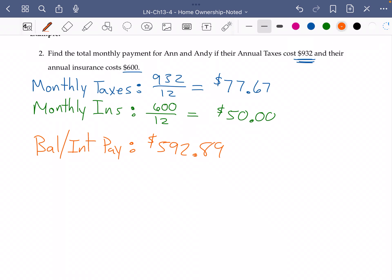And so their total monthly payment is going to be the $592.89 plus the $77.67 plus the $50. And when you add all that up, you get a payment of $720.56.